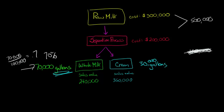So we need to allocate this 500,000 and we just use that 70% for the whole milk. So the 500,000 times 70% is going to be the amount of joint costs that is allocated to the whole milk, and that's going to come out to $350,000.